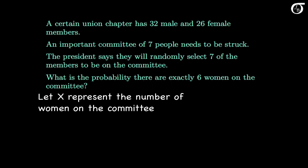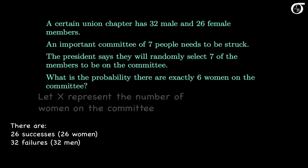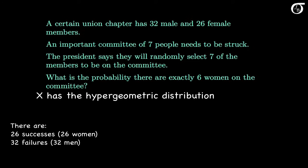The distribution isn't stated explicitly, but sampling here is done without replacement — we're not going to pick the same person twice, so each person can only be on the committee once. There are 26 successes in the population (the 26 females) and 32 failures (the 32 men). We are sampling without replacement and counting the number of successes, so x has the hypergeometric distribution.